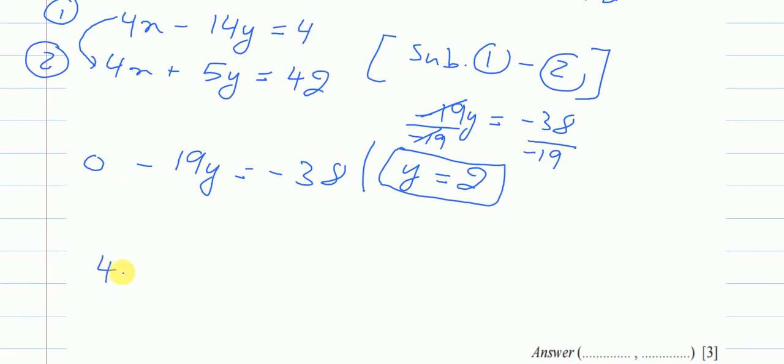So I will say 4x minus 14y, what is y? y is 2. So I have already substituted the y. In this equation, y was 2. I have found, I have substituted here. So equals to 4.